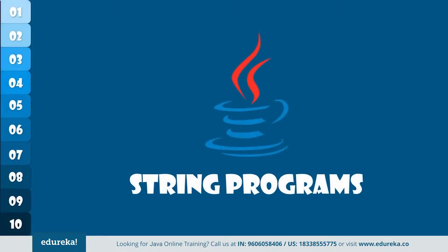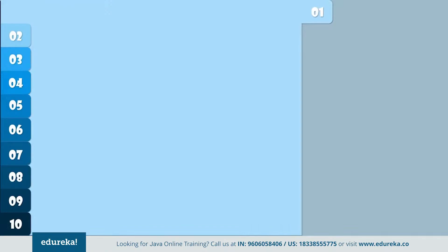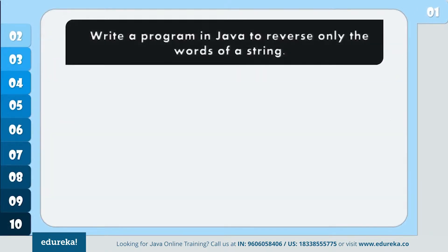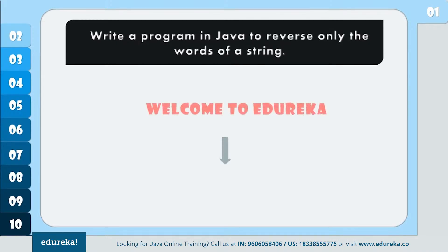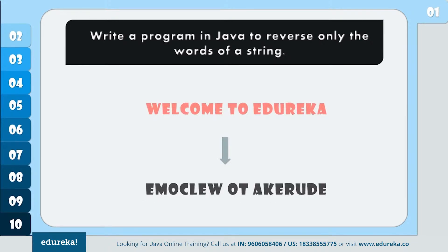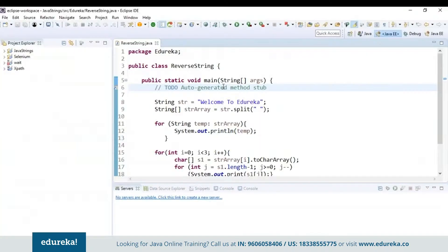Let's begin with some important programs on strings. The first problem statement goes like this: write a program in Java to reverse only the words of a string. Suppose you have a statement like 'welcome to Edureka' — you just have to reverse the words, but the sentence should remain the same. Let's take a look at the code. First, I have declared the string 'welcome to Edureka' in which I want to reverse the words.